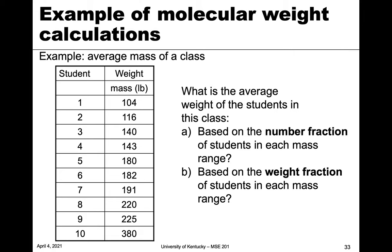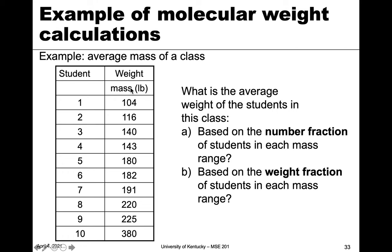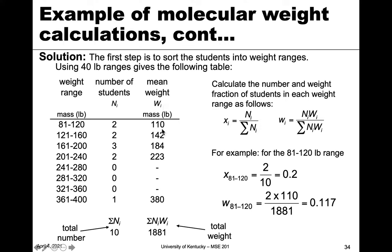The first step is to create bins or size ranges: 81–120, 121–160, and so on up to 400 pounds. In textbook problems, these size ranges are typically given to you. After establishing the ranges, we look at two things: how many students fall in each range, and the mean weight within that range. For the 81–120 range, we have two students.